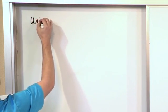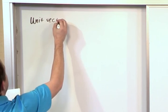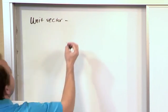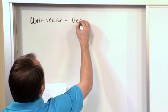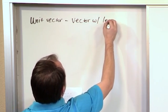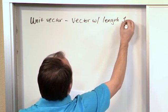So if I had to write that down, it would be called unit vector. The definition of a unit vector is just a vector with length of one.